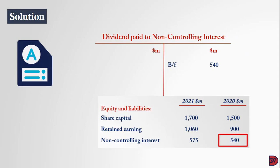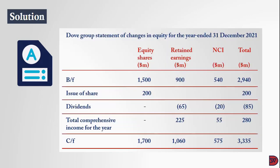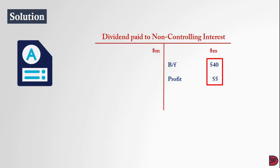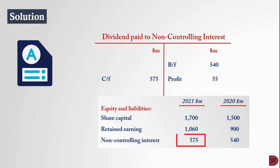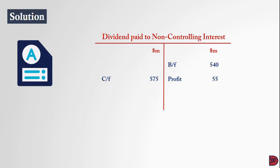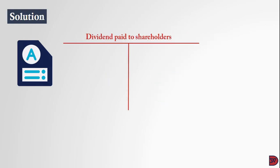For the dividend paid to non-controlling interest working: opening NCI balance was 540 million. Add profit allocated of 55 million, giving an expected 595 million. Since the acquisition was fully owned, there is no increase from new NCI. The closing 2021 balance was 575 million, meaning 20 million dollars was paid as dividend to non-controlling interest.